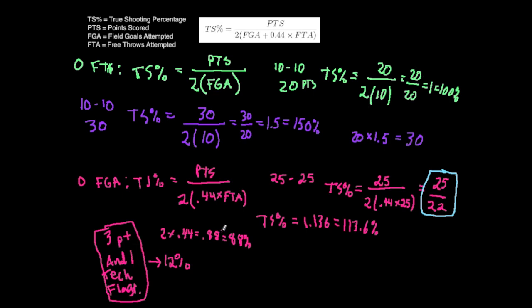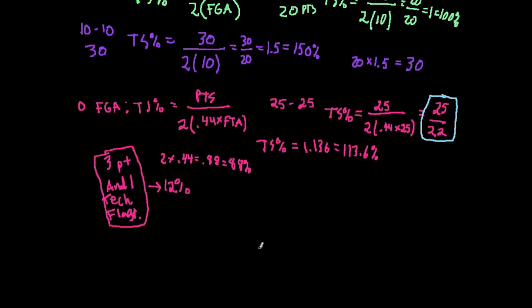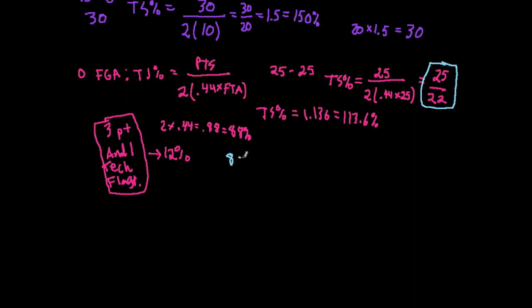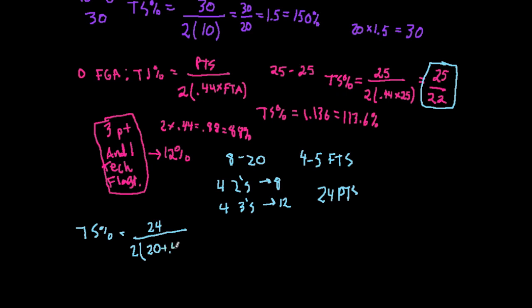Now let's look at one more example taking into account everything. A player went 8 out of 20 from the field, with 4 twos for 8 points and 4 threes for 12 points. They also went 4 of 5 from free throws, giving them 24 points total. Their true shooting percentage would equal 24 points divided by 2 times 20 field goals attempted plus 0.44 times 5 free throws attempted.